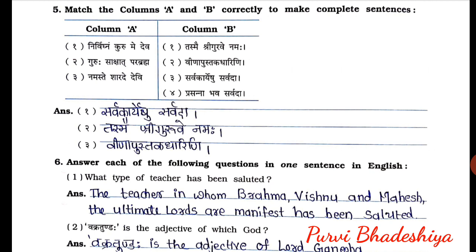Third one: Namaste-sarade-devi — matched with column B second statement — Veena-hustaka-dharini. So: Namaste-sarade-devi Veena-hustaka-dharini.